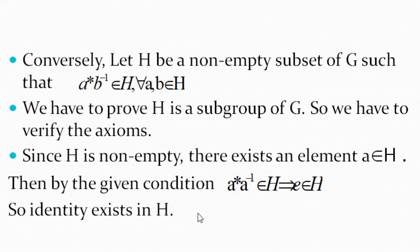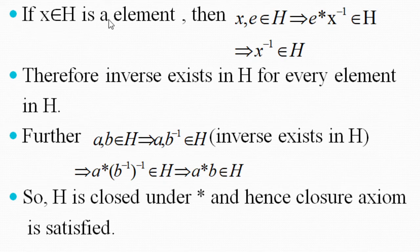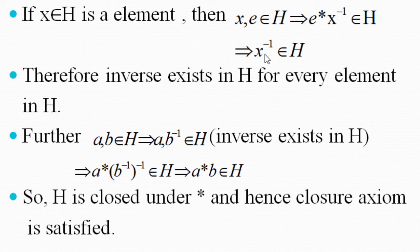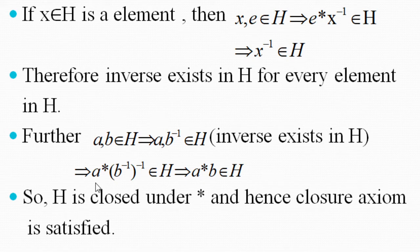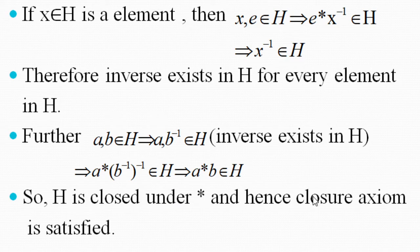So identity exists in H. Next, we check whether inverse exists. If X belongs to H, then since E also belongs to H, by the given condition, E * X⁻¹ belongs to H, which means X⁻¹ belongs to H. So inverse exists in H for every element. To prove closure: if A, B belong to H, then B⁻¹ belongs to H. Applying the given condition to A and B⁻¹, we get A * (B⁻¹)⁻¹ = A * B belongs to H. So closure axiom is satisfied.